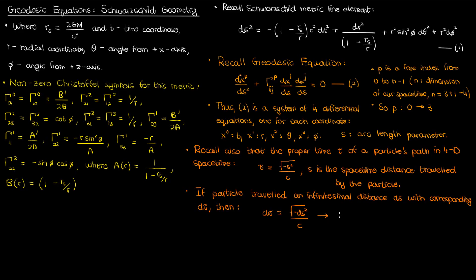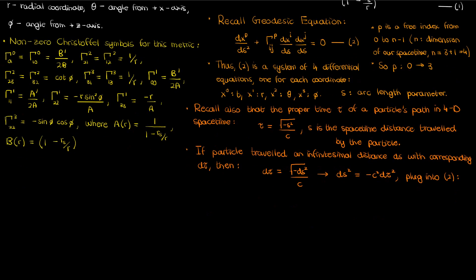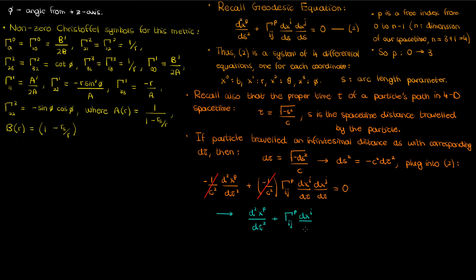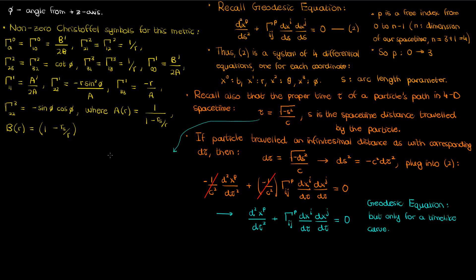Rearranging the infinitesimal equation gives ds² = −c² dτ². Plugging this into equation 2, the c² terms cancel, leaving our geodesic equation with derivatives with respect to proper time — equation 3. This conversion only applies for time-like curves, where the space-time distance is negative by our sign convention. For space-like curves the square root is imaginary, and for light-like curves proper time is zero, so equation 3 only applies to time-like curves.